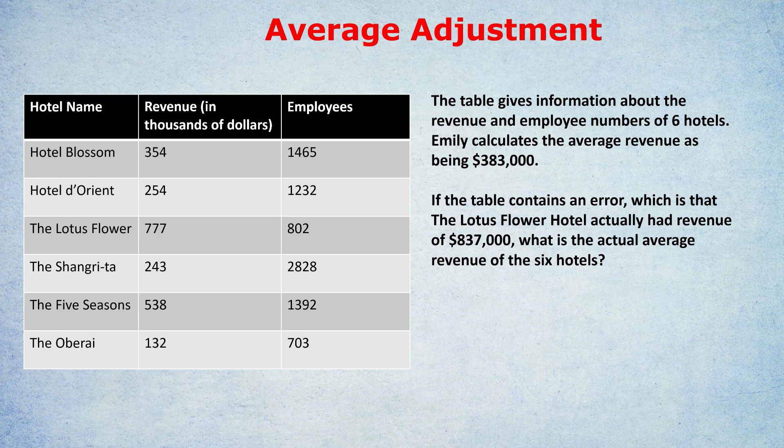What type of questions am I talking about? Let's take this example. The table gives information about the revenue and employee numbers of six hotels. Emily calculates the average revenue as being $383,000. You can see the revenue in thousands of dollars for each of those six hotels, and she has calculated the average as $383,000, which we can trust as correct. However, the table contains an error: the Lotus Flower Hotel actually had revenue of $837,000. What is the actual average revenue of the six hotels?